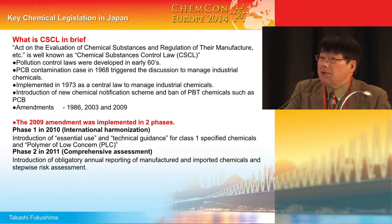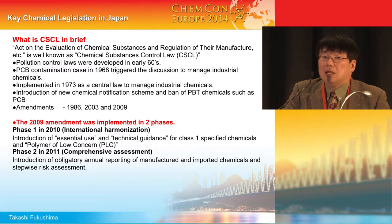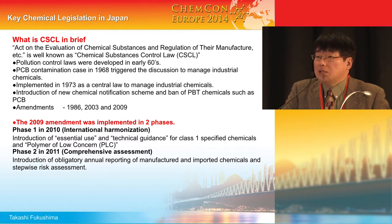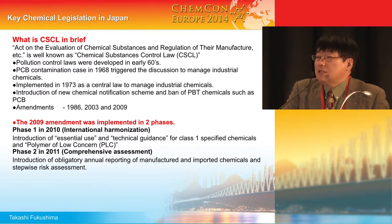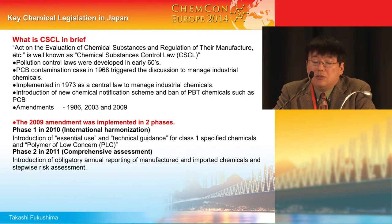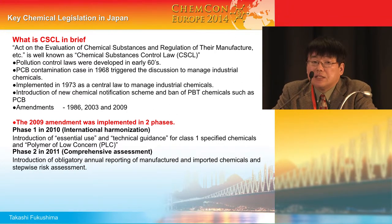The first law is basically focused on the ban of PBT chemicals like PCB, and also introduced the new chemical notification scheme. The first new chemical notification scheme under the first law is focused on preventing the marketing of PBT chemicals. It means if a chemical is not persistent or not bioaccumulative, there is no need for other information like human toxicity. The 1986 amendment introduced regulation on chemicals that are not bioaccumulative.